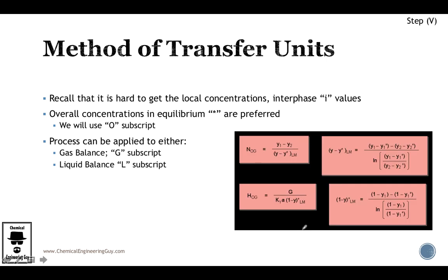What this means is that instead of interface concentrations, we can use the overall concentrations. Where do we get this? If we use Henry's law, we simply input this value as follows.